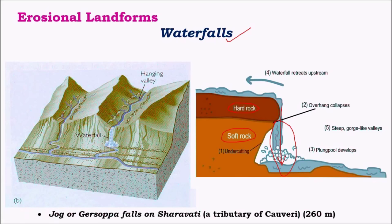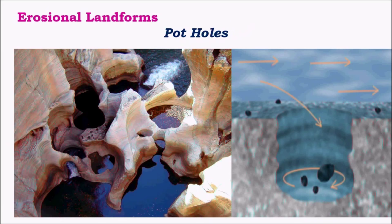One example is Jog Falls, also called Gersoppa Falls, along the Sharavati River, which is a tributary of the Cauvery. The height of these falls is 260 meters, making it the highest waterfall in India, located in Karnataka state.